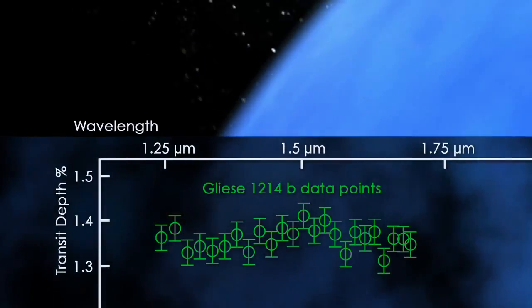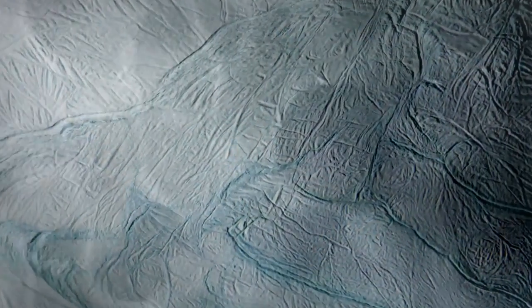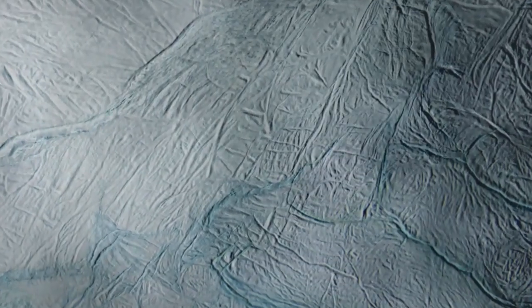By contrast, planet GLISA-1214b is a comparatively inviting water world. Its nearly flat transit depth curve hints at a shallow atmosphere of pure steam enveloping an ocean thousands of kilometers deep, with an interior of hot ice, water solidified by extreme pressure rather than cold.